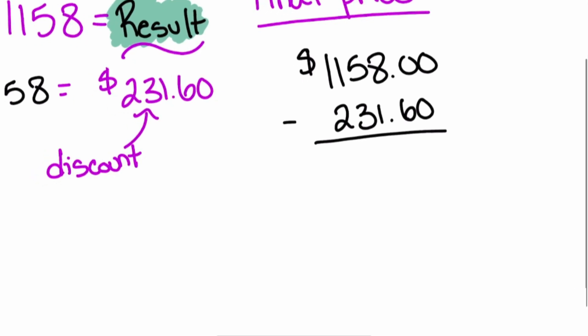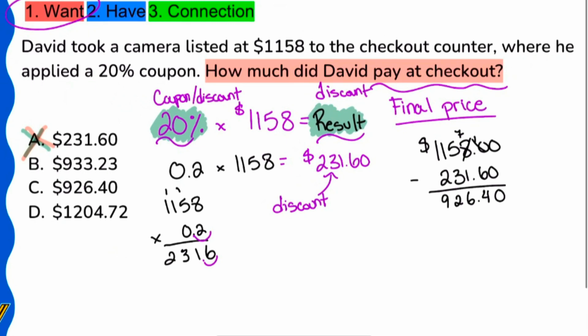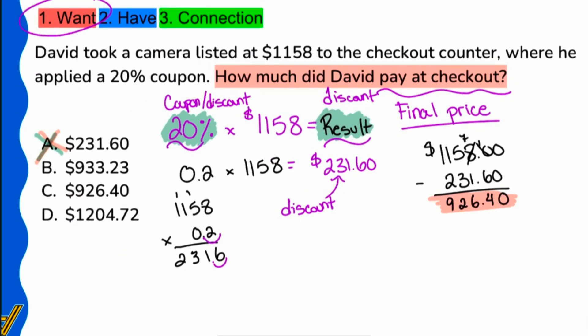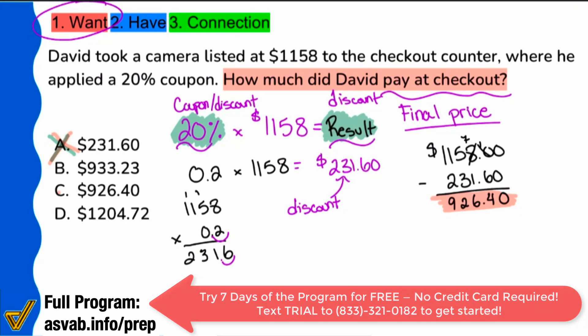So here we go. We'll go ahead and borrow one, then borrow one again. And we actually didn't need to do that at all for the second one. Excuse me there. So we'll have 10 minus 6, which is 4. And then we have 7 minus 1, which is 6. 5 minus 3, which is 2. 11 minus 2, which is 9. So we have $926.40. That right there, that is what David will pay at checkout. And that is shown in answer choice C. Excuse me there. So there it is.